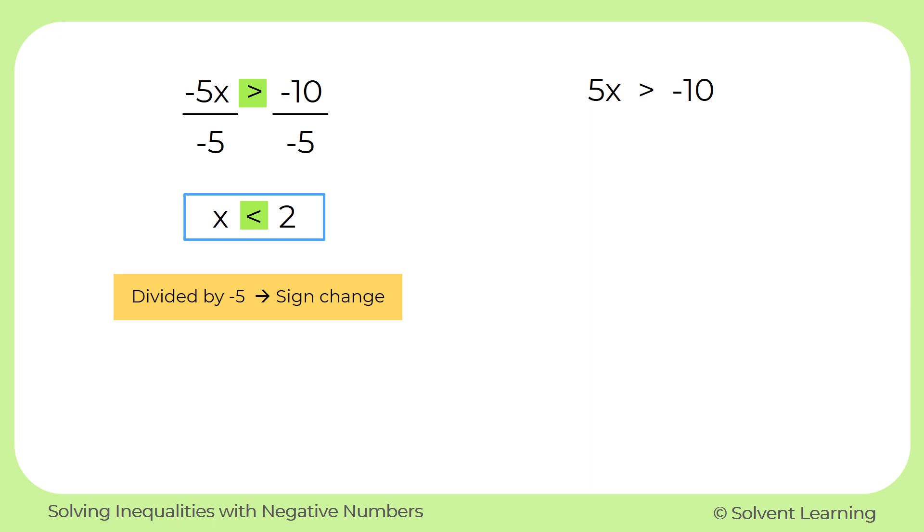Now let's look at the right side. Now on this problem, we have 5x is greater than negative 10. We still have a negative number in this problem. We have the negative 10 on the right side. However, that's not what determines whether the sign will change or not. It's what we're actually doing to get our variable by itself.